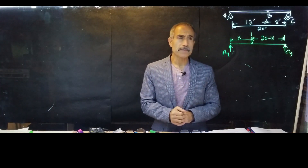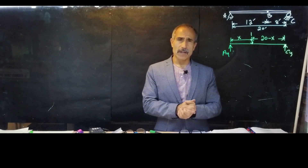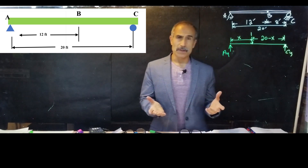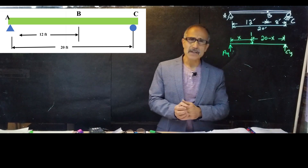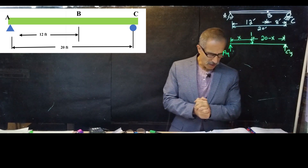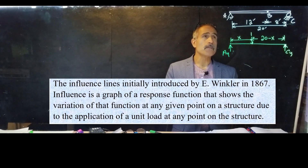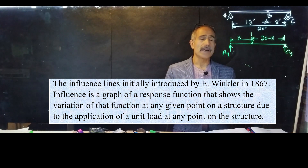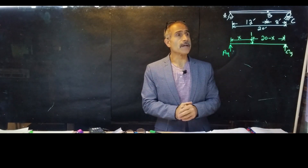Welcome back. In this lecture we're going to talk about how to draw influence lines for reaction forces, shear, and moment. What is an influence line? In 1867, an engineer named Winkler first came up with the idea. The influence line is basically a graph of the response of the support system in the structure when you have a moving load going across the beam.